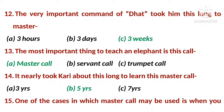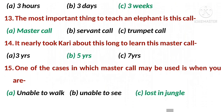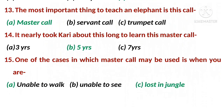Number fourteen: it nearly took Kari about this long to learn the master call. The right answer is B — five years. Number fifteen, the last one from this lesson: one of the cases in which the master call may be used is when you are — right option is C — lost in the jungle.